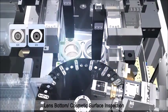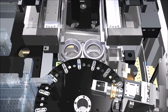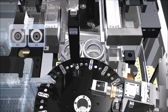The cleaned assembly goes to the inspection area, and then foreign materials and scratches on the cosmetic surface of the lens bottom are inspected.